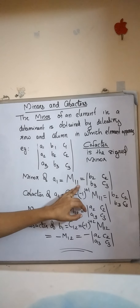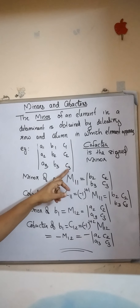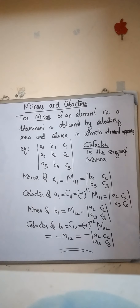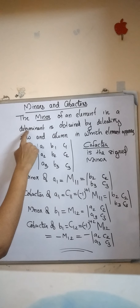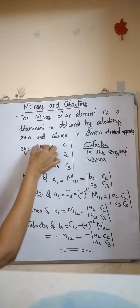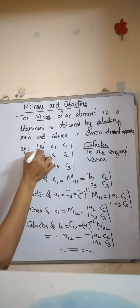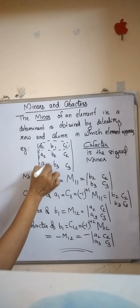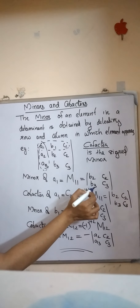Since a1 is a first row, first column element, we represent it as M11. If it is a third row, third column element, we represent it as M33. To find the minor of a1, by the definition, we delete the first row and the first column. We get the minor as the determinant b2, c2, b3, c3.